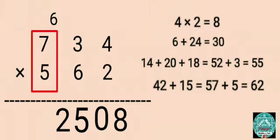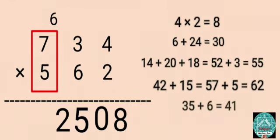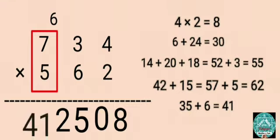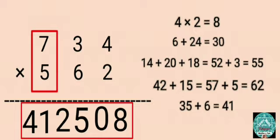Step 5: Multiply 7 by 5, then add 6 that's carried forward: 35 plus 6 equals 41. Write 41 before 2. So the answer is 412,508.